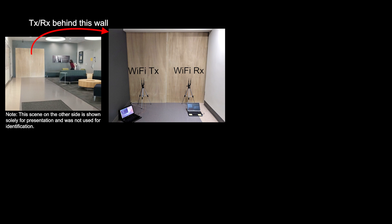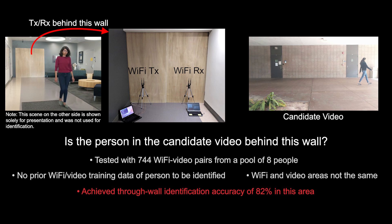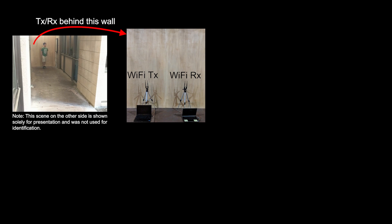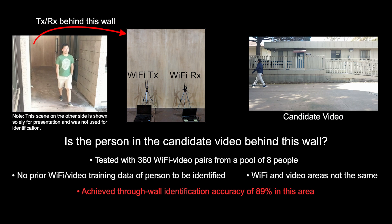Consider the second area. The left figure then shows what is on the other side of the wall. Cross Modal ID achieves an identification accuracy of 82% in this area. Cross Modal ID achieves an identification accuracy of 89% in a third area. Let's now see how we have enabled this.